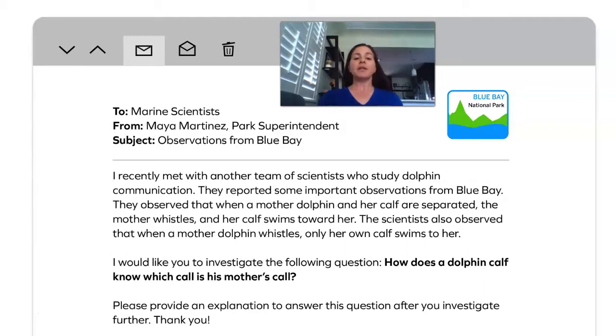I recently met with another team of scientists who study dolphin communication. They reported some important observations from Blue Bay. They observed that when a mother dolphin and her calf are separated, the mother whistles and her calf swims towards her. The scientists also observed that when a mother dolphin whistles, only her calf swims to her. I would like you to investigate the following question. How does a dolphin calf know which call is his mother's call? Please provide an explanation to answer this question after you investigate further. Thank you.